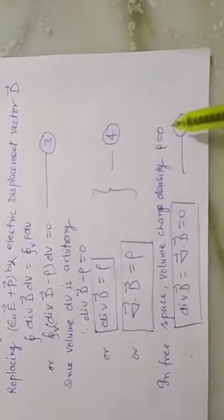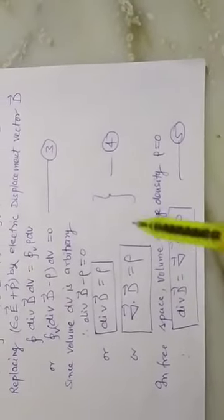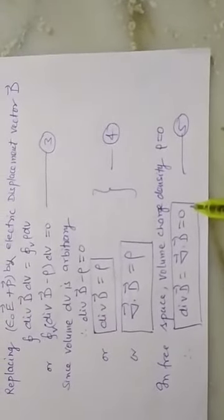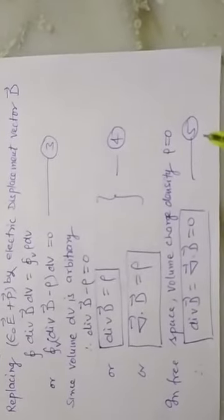In free space, volume charge density rho equals zero. Then equation 1 is reduced to divergence of D equals zero. This is equation number 5 and is the final equation.